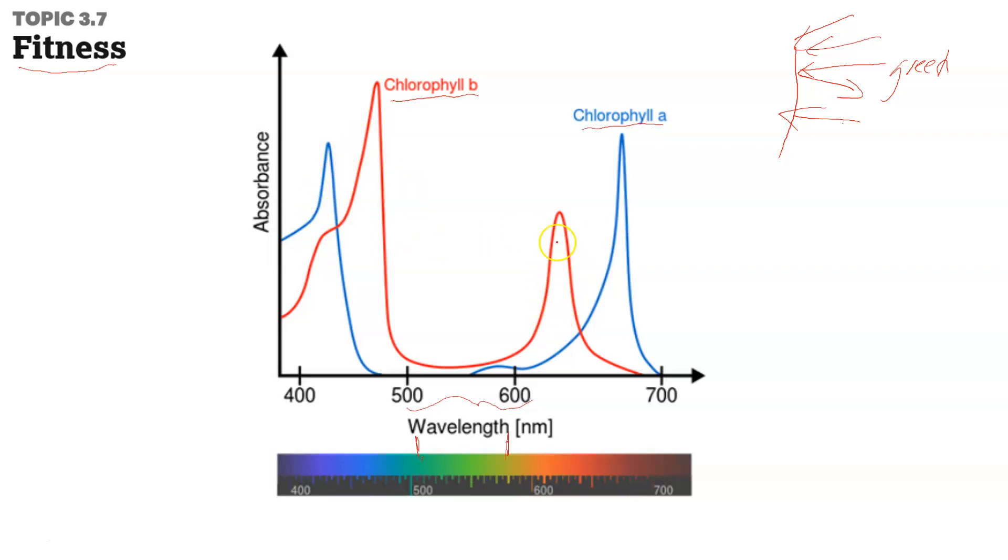And conversely, on the other side, they absorb at very high wavelengths - chlorophyll B and chlorophyll A. A is kind of the more extreme of the two. But they don't really do so hot at this green area where they reflect the light.